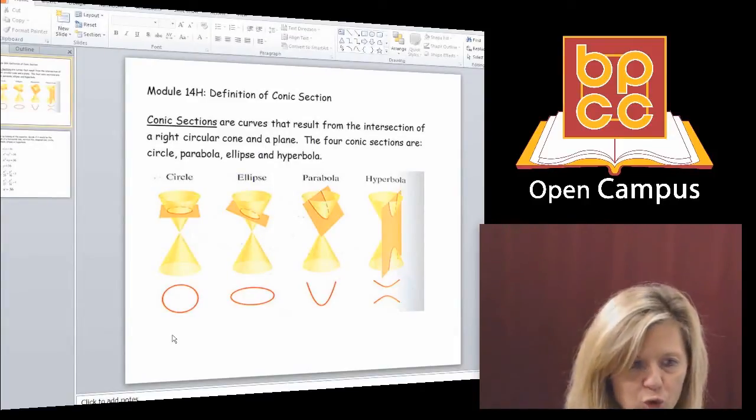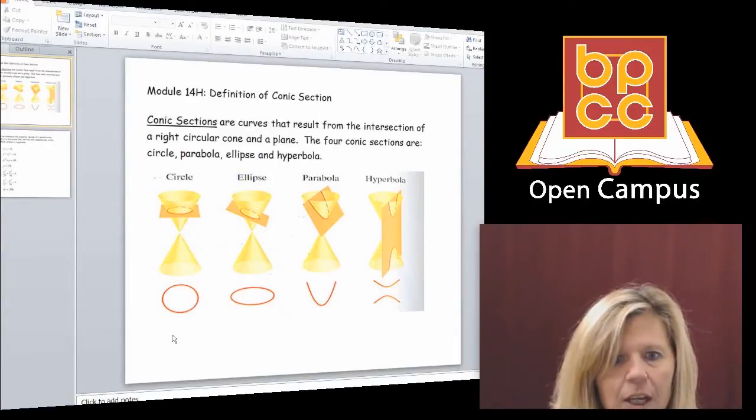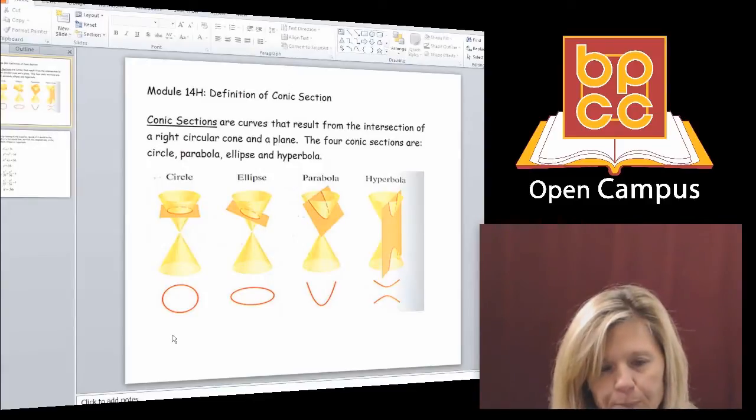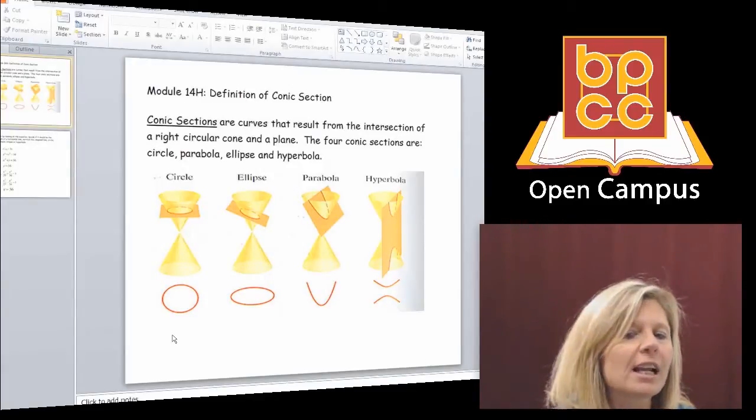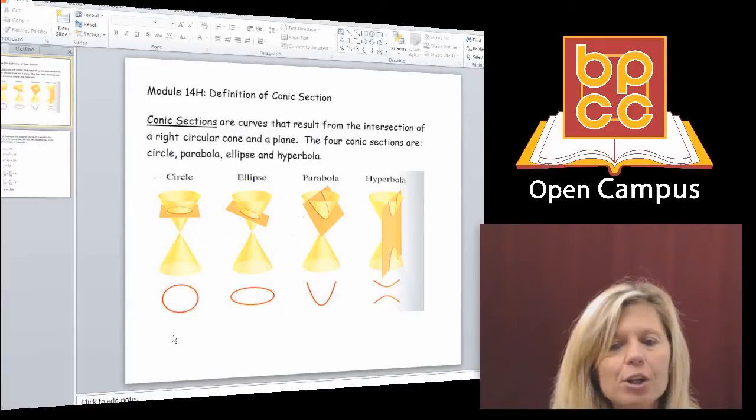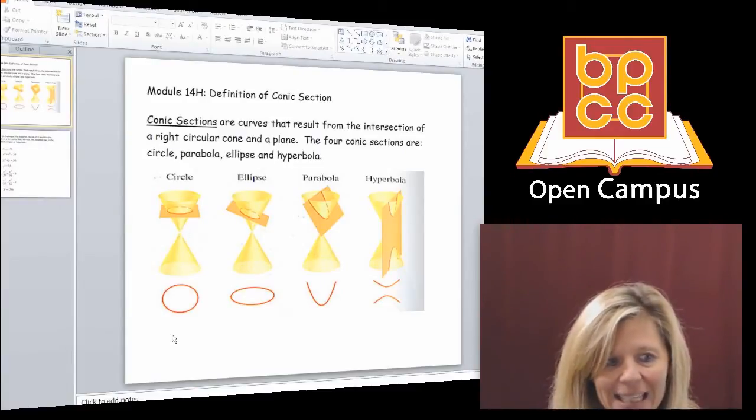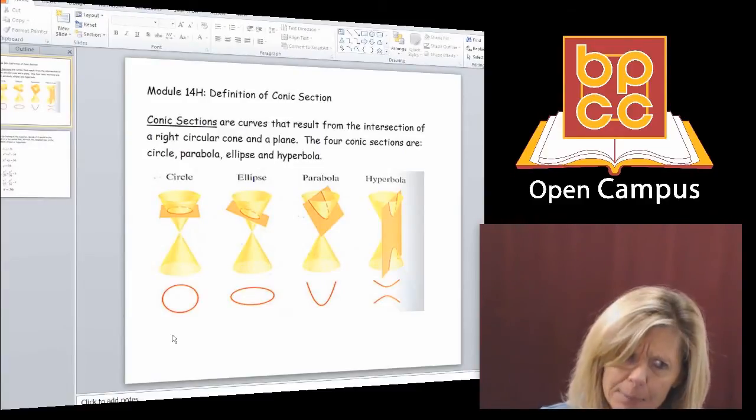And depending on the way you cut it will form each of those four graphs. So if you took an ice cream cone and cut it straight across the top horizontally, you would make a circle. If you took an ice cream cone though, and you cut it from one end to the other diagonally, it would make an ellipse.